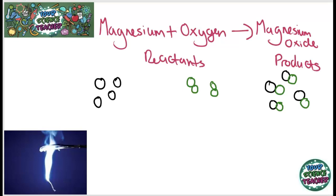What is important to see from the particle diagrams is that no particles have been created or destroyed. There are four magnesiums on the left-hand side of the equation and four magnesiums on the right-hand side. There are also four oxygen atoms on the left-hand side and four oxygen atoms on the right-hand side. Because you cannot create or destroy atoms, if you know the mass of magnesium and you know the mass of magnesium oxide made at the end, you can actually calculate the mass of oxygen it reacted with.